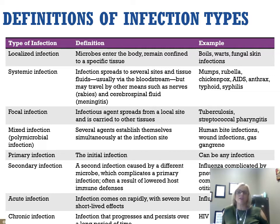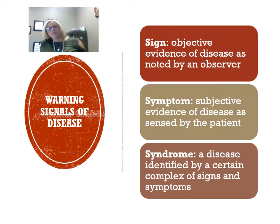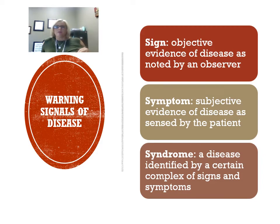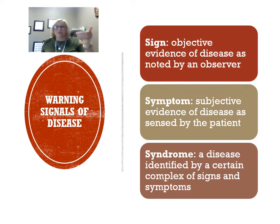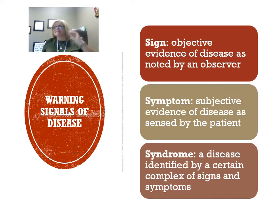Definitions of infection types are very important — be sure to learn all of these. Symptoms are clinical manifestations of disease as reported by the patient. Signs are clinical manifestations noted by assessment — measurable things like blood pressure and temperature. A syndrome is a disease identified by a complex of signs and symptoms grouped together. The four cardinal signs of inflammation are: rubor — redness, tumor — swelling, calor — fever, and dolor — pain.